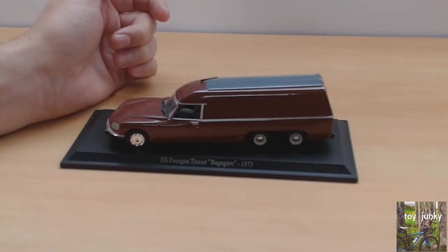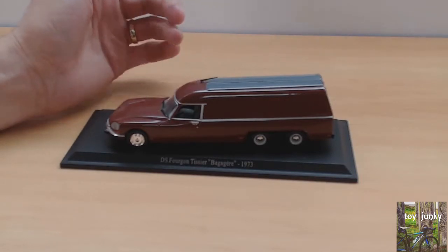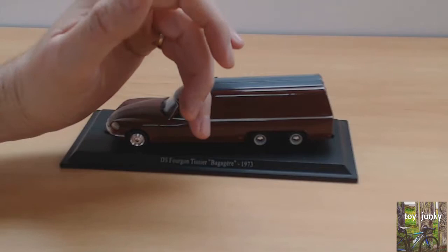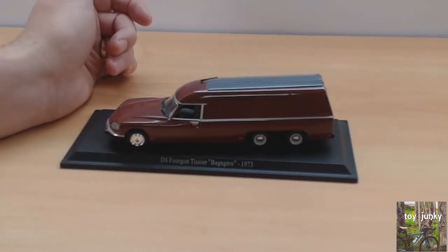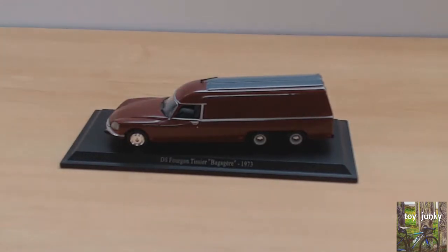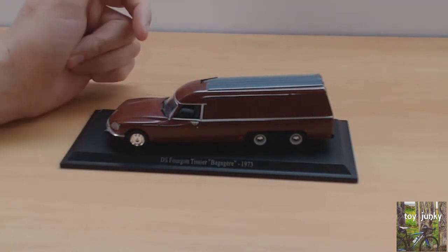And this was called a DS Fourgon. Obviously a Fourgon is just another word for van. Tissier, and I can't even pronounce that, Bagheria. And this is from 1973.